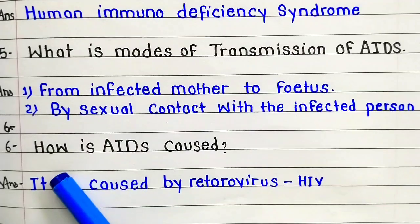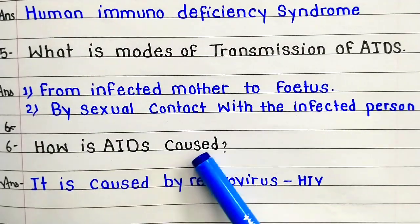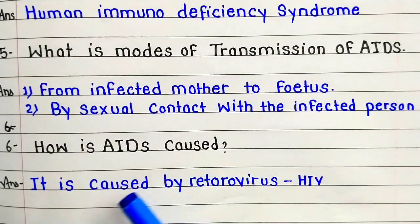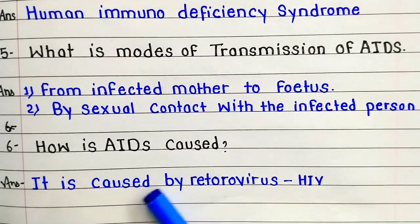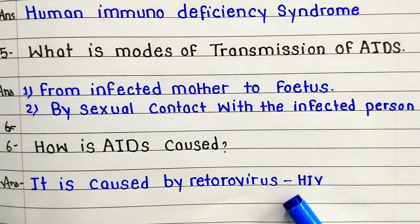Question number six: how is AIDS caused? Answer: it is caused by retrovirus HIV.